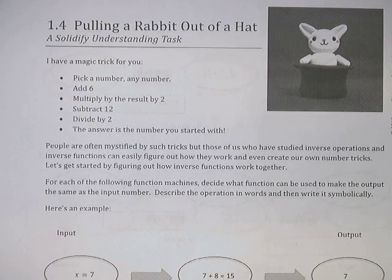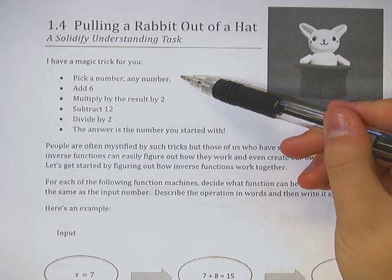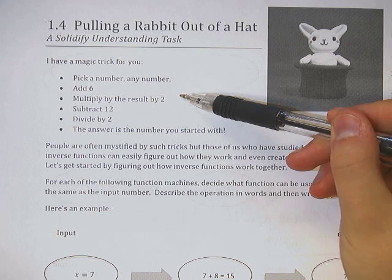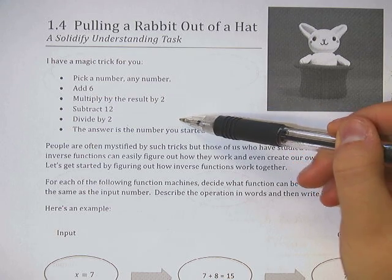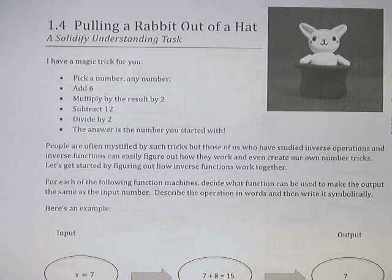It starts out with a magic trick. Now there are a lot of these kinds of magic number tricks. This is the one they chose. So you pick a number, add 6 to it, multiply the result by 2, subtract 12, divide by 2, and you get the answer of what you started with.